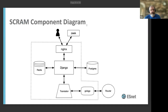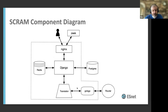Our deployment looks like this. Inside the dotted lines are the different pieces of SCRAM running in containers. For us, the Postgres database that keeps things in sync sits outside, and obviously the routers sit outside too. That's a pretty cool tool, and you should check it out.